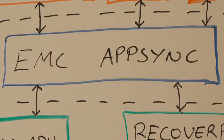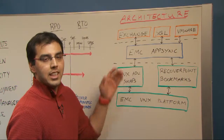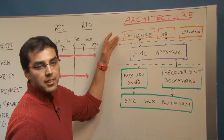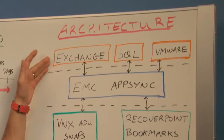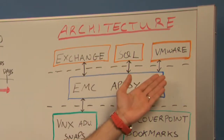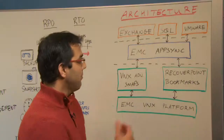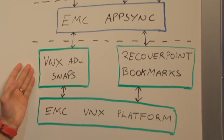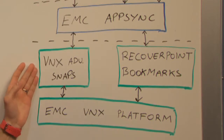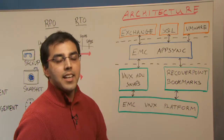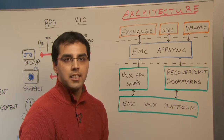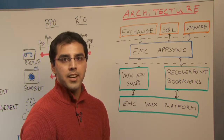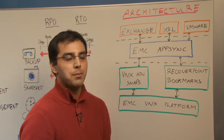EMC AppSync is a replication management software. It provides an SLA-driven self-service approach to protecting critical Microsoft applications, such as Microsoft Exchange, SQL Server, as well as your VMware data store environments. It relies on the underlying EMC replication technology, such as VNS Advanced Snapshots as well as RecoverPoint bookmarks. In addition to that, it provides value-added services such as SLA alerting and reporting, automated application awareness, and streamlining workflow management.